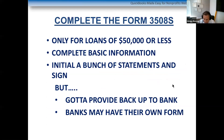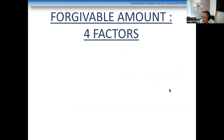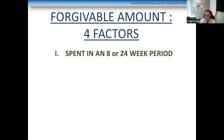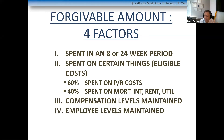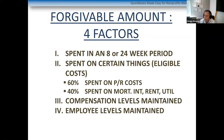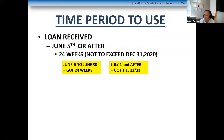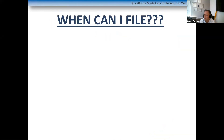The four factors for forgiveness: you have to spend the money in either an 8 or 24-week period; spend it on eligible costs — payroll and other qualifying expenses; maintain compensation levels; and maintain employee levels. If your loan is $50,000 or under, you don't have to worry about factors three and four. If you're over $50,000, you do — and that's beyond the scope of this webinar.